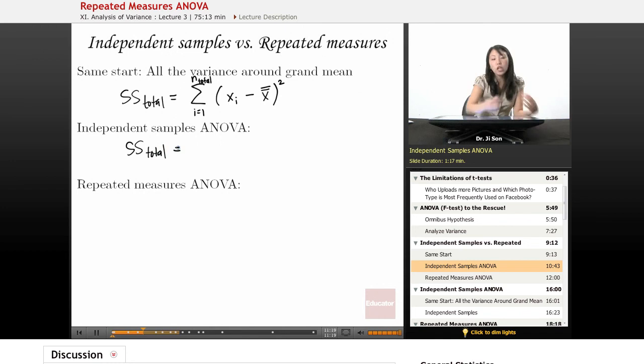When you split it up into its parts, you see that it's made up of the sum of squares within the groups, inside of the groups, and the sum of squares between the groups added up.